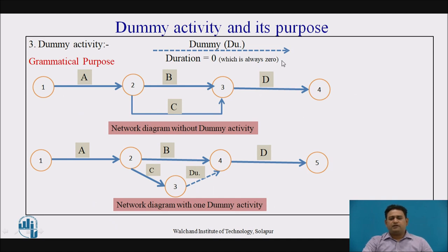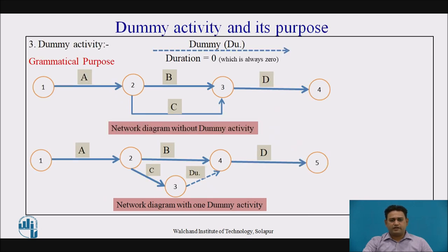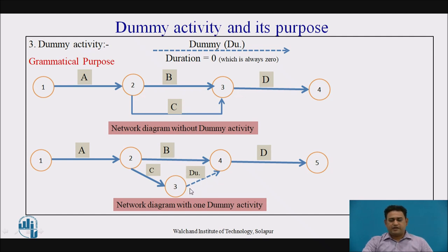Now, dummy activity and its purpose. A dummy activity is an activity which does not consume any time or resource. They are only presented in the network diagram for logical maintenance. The grammatical purpose and logical purpose are the two main purposes for using dummy activities in a network diagram. The grammatical purpose means: if two activities have the same starting event, their ending events should be different. For this purpose, here B and C start simultaneously, and to maintain grammatical correctness we place the dummy activity as shown.